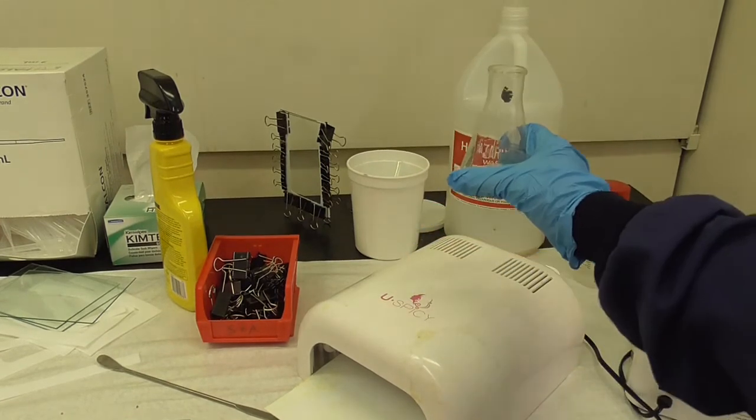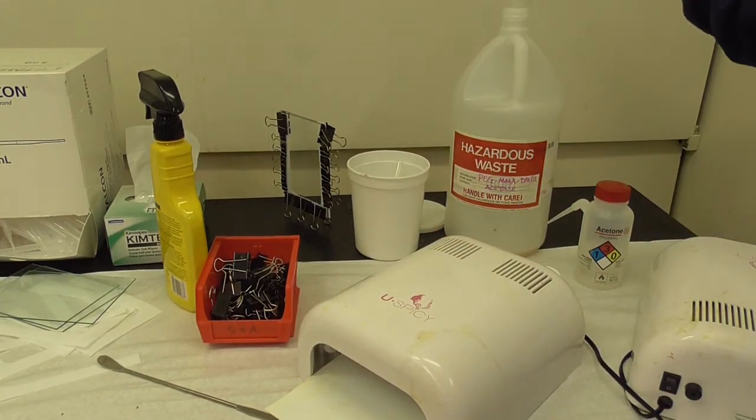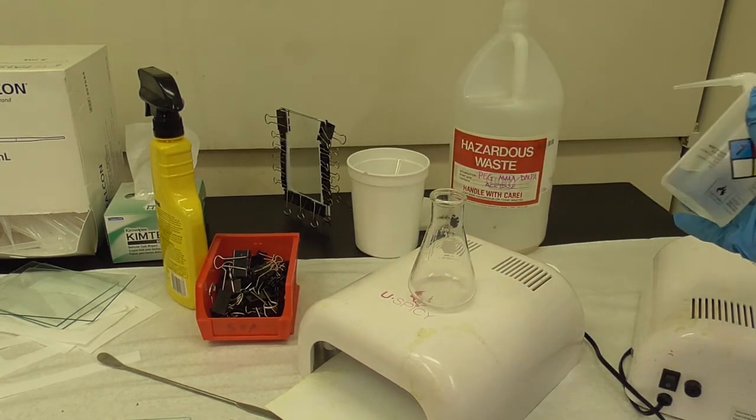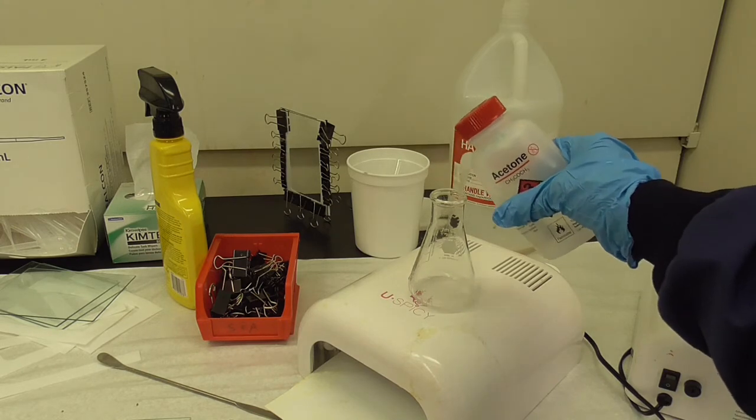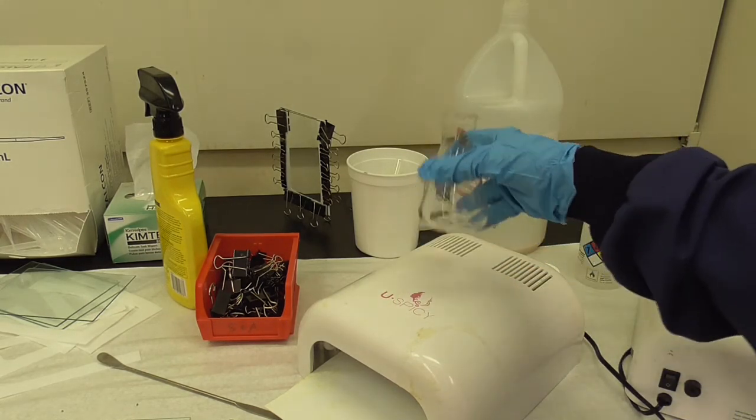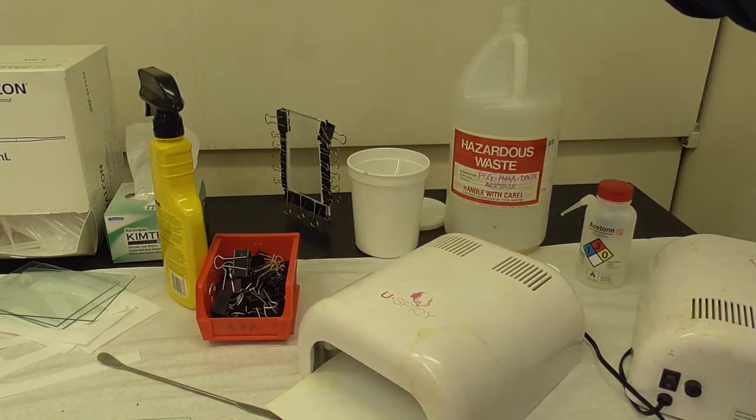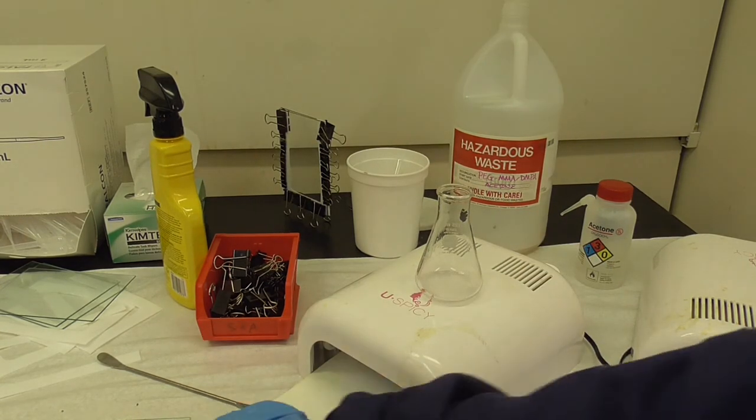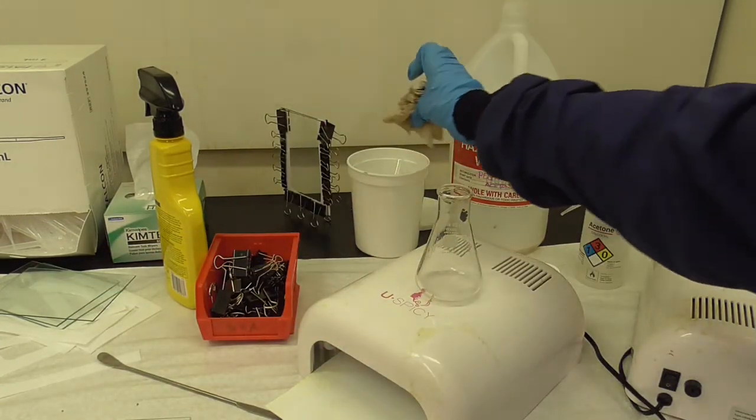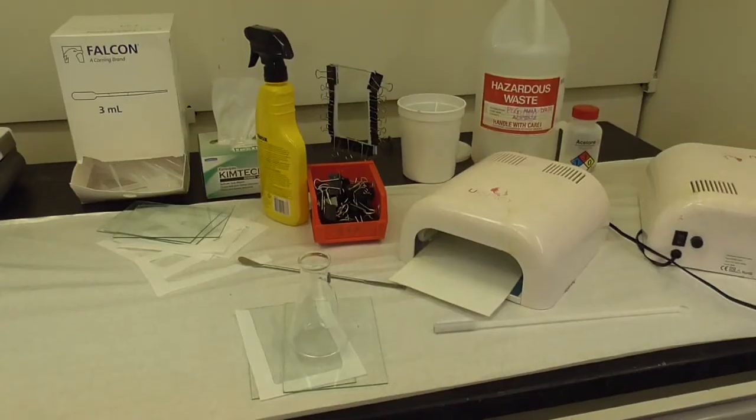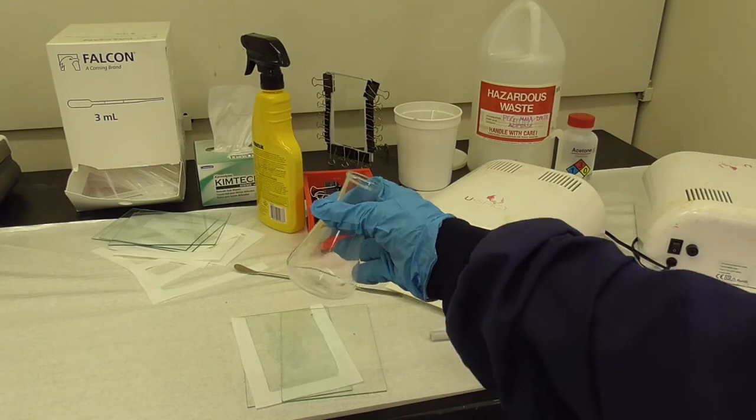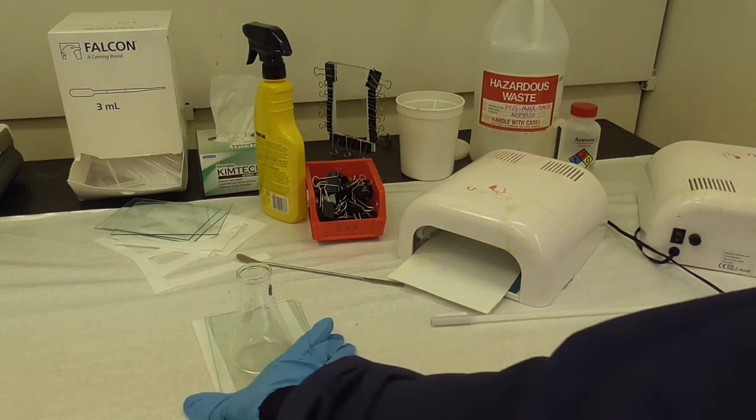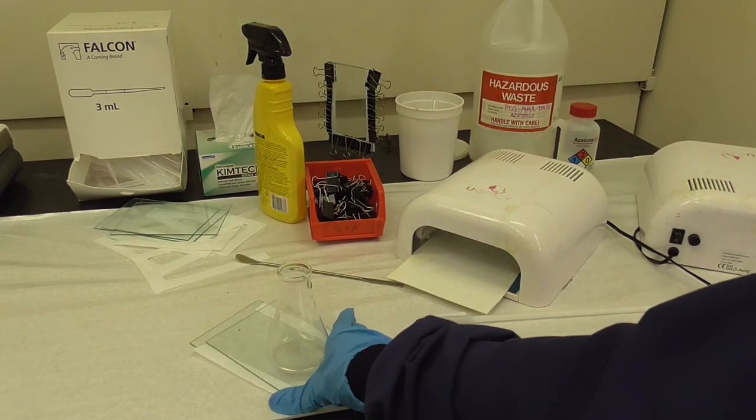And now we're going to pour this in the liquid waste. You can rinse out the Erlenmeyer with some acetone. Any solid waste you have goes in the little white tub. So then this rinsed Erlenmeyer along with the mold parts you put on the cart in the middle of the room for further washing by the teaching assistant.